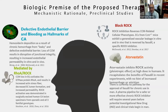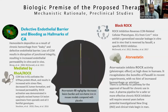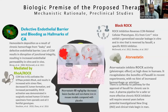Atorvastatin is a repurposed drug where at high dose it accomplishes RAC kinase inhibition. We can show that the effect of atorvastatin decreases iron in mouse lesions, and now we are testing it in humans with QSM as a surrogate endpoint.